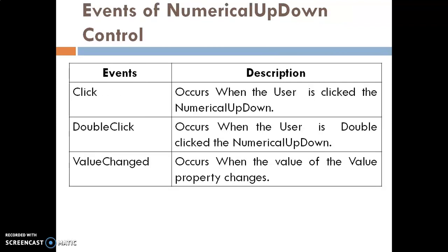These are the common events of the Numerical Up-Down control. The first event is Click — it occurs when the user clicks the control. The second is Double Click — it occurs when the user double clicks the control. The most commonly used event is Value Changed — it occurs when the value of the Value property changes.